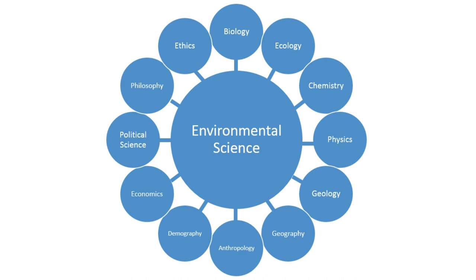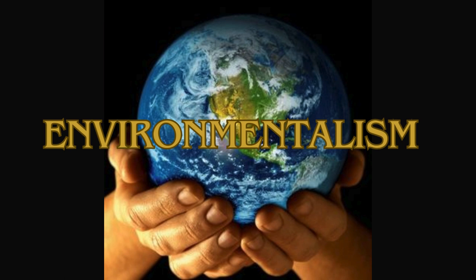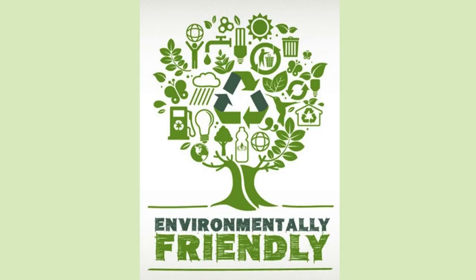Environmental science explores the interdisciplinary study of interactions between humans and the environment. Ecosystem examines the complex network of relationships between living organisms and their environment. Environmentalism is the advocacy for the protection and preservation of the natural environment. Environmentally friendly describes products, services or practices that have a minimal impact on the environment.